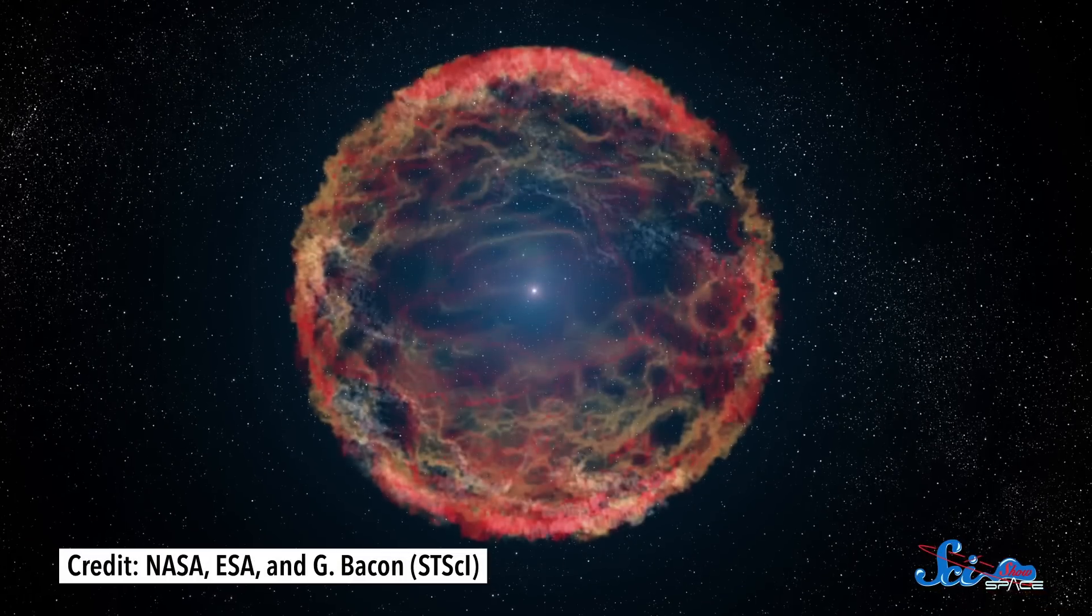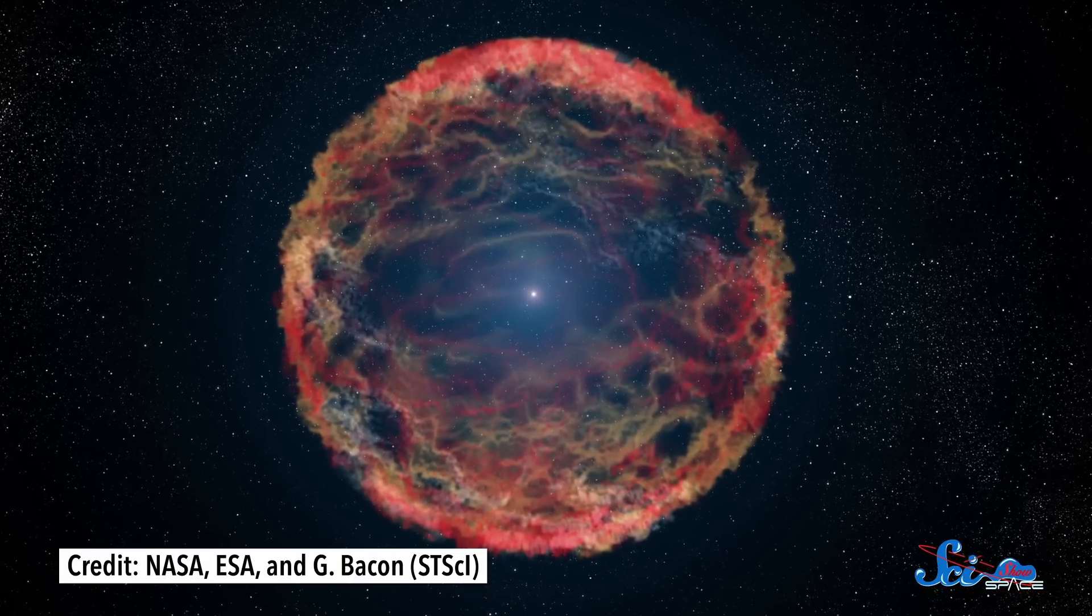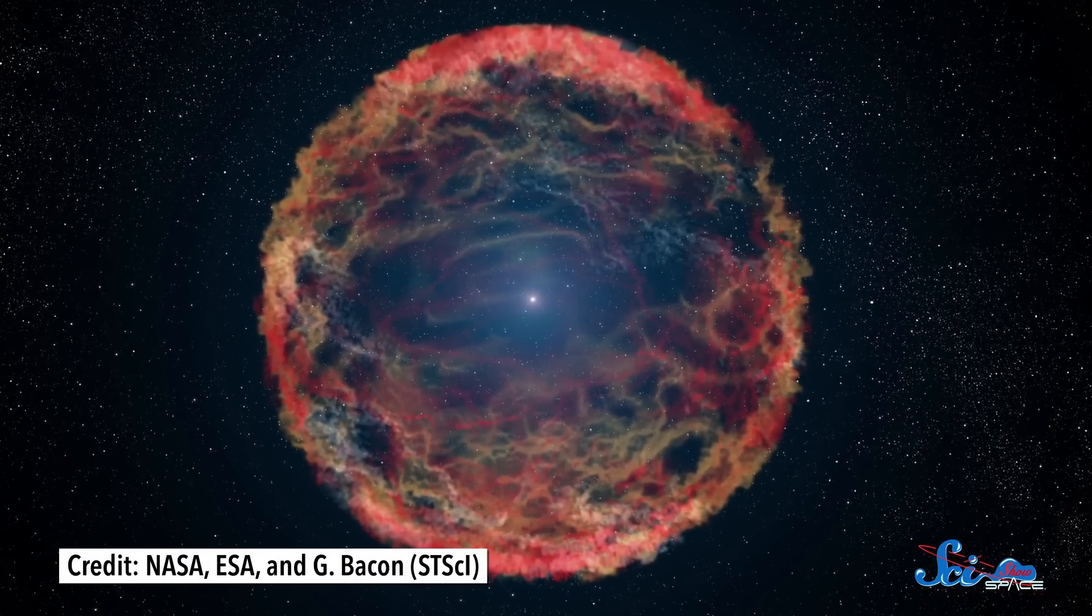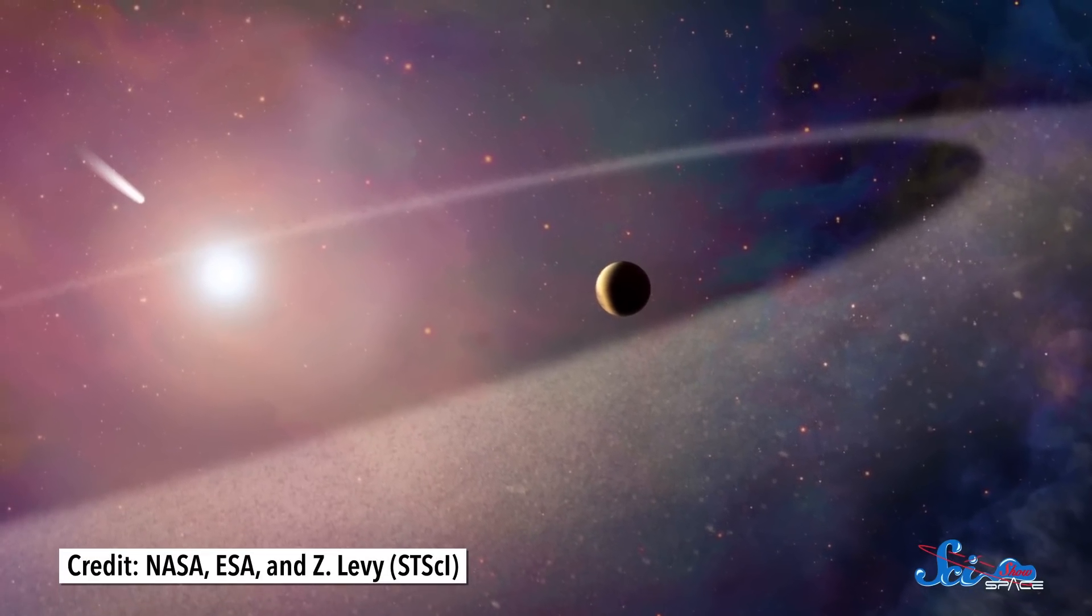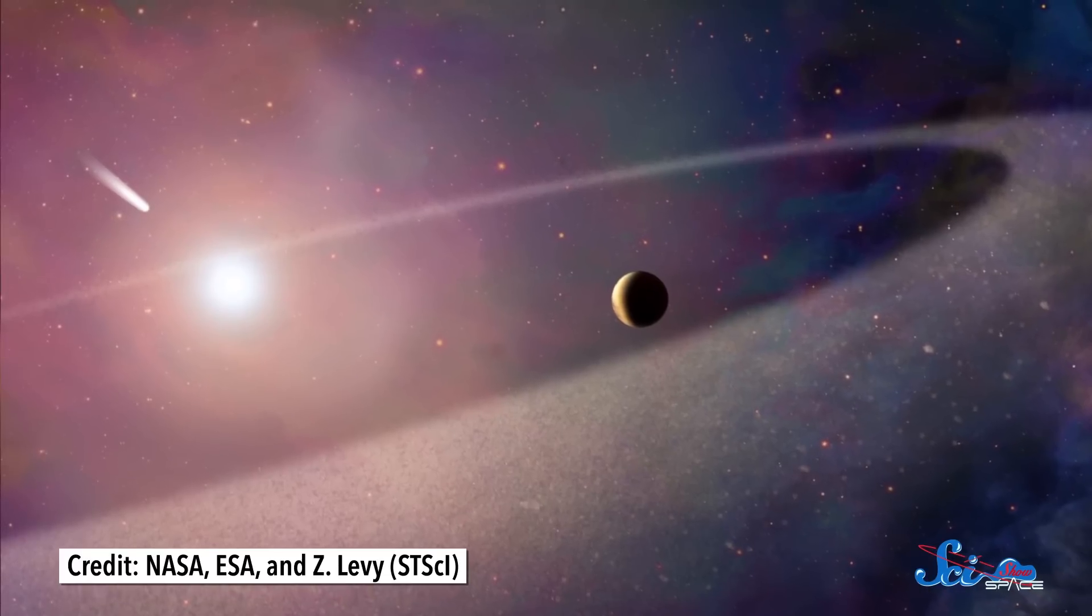Turns out, it's a lot. Neutron stars are what's left when a massive star, about 10 to 30 times the mass of our Sun, explodes in a supernova. In smaller stars, the core that's left behind forms a white dwarf. But with stars this big, the core itself collapses.